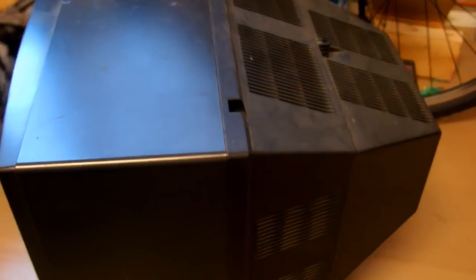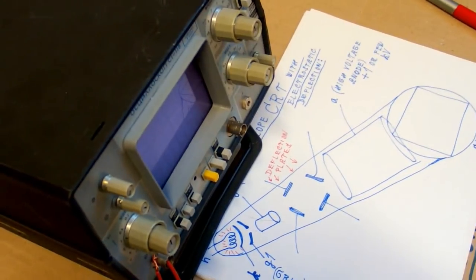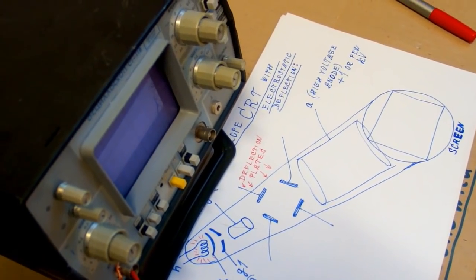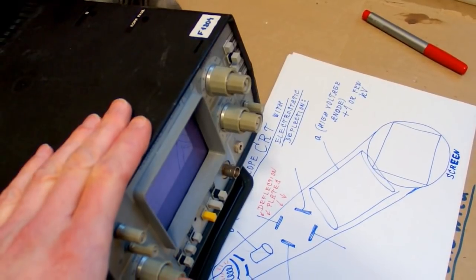It actually is quite long, but with deflection plates it would have to be even much longer. But the problem of deflection coils is a slow response. You can't use it to measure high frequency signals. This is why in an oscilloscope you have electrostatic deflection.